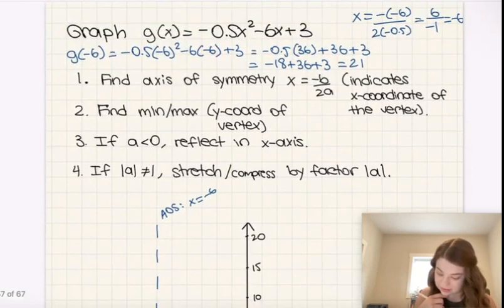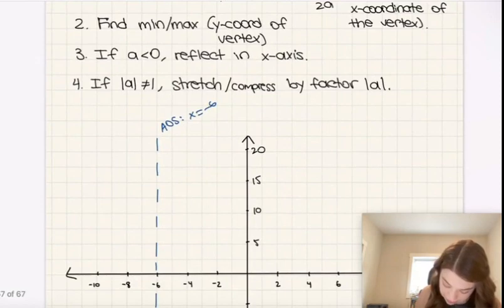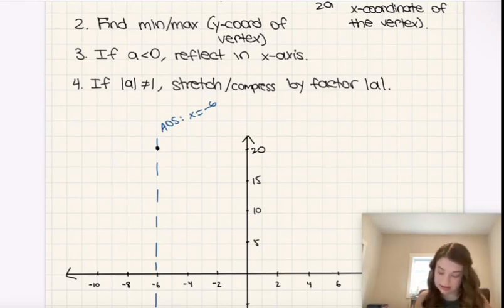And it is negative at least, so we'll be able to go down. All right, so right about there, a little bit above 20, because it's 21 technically, is going to be where our vertex is. So there we go.